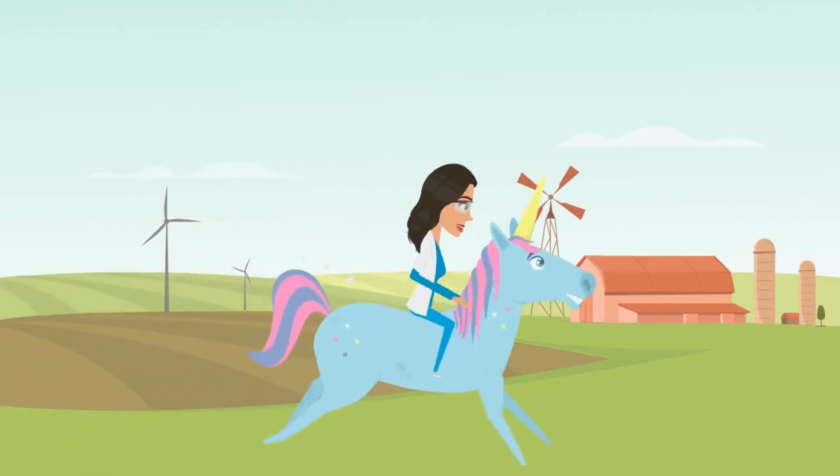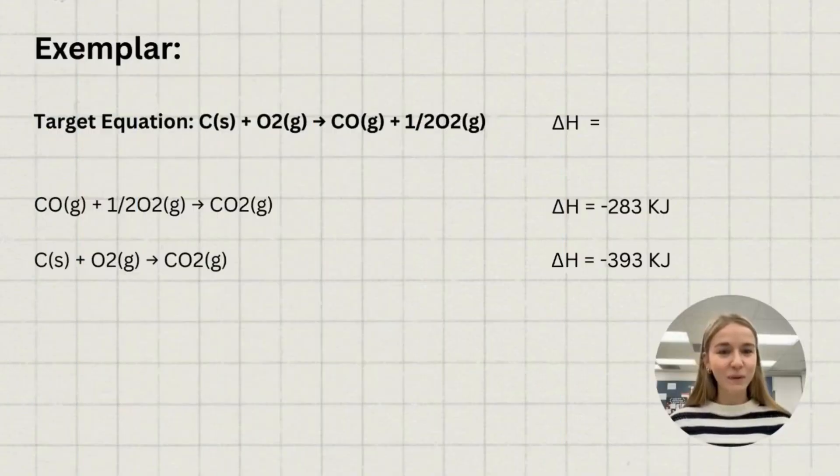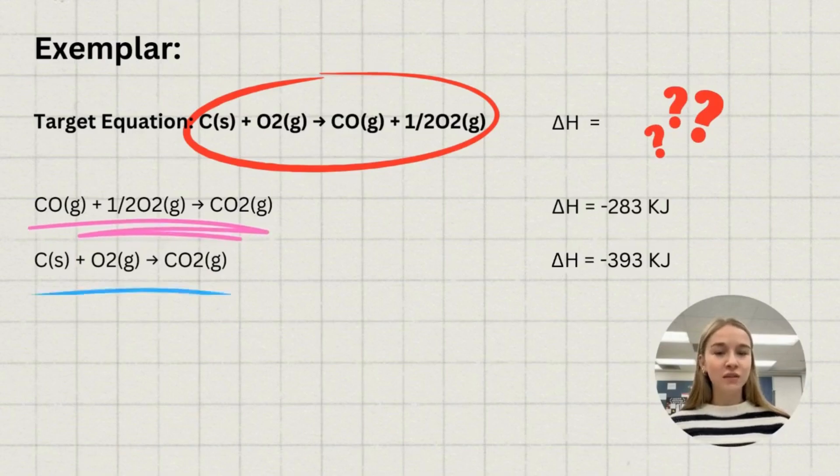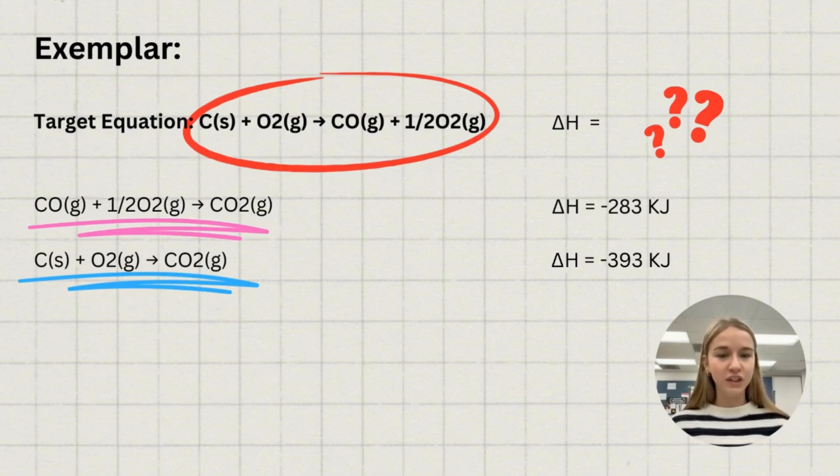Let's ride on over to our practice problem. The top equation written here is our target equation, given to us without an enthalpy change or delta H value. Using the other two given equations below, we are easily able to solve for our delta H value of our target equation: carbon and oxygen gas forming carbon monoxide and oxygen gas.